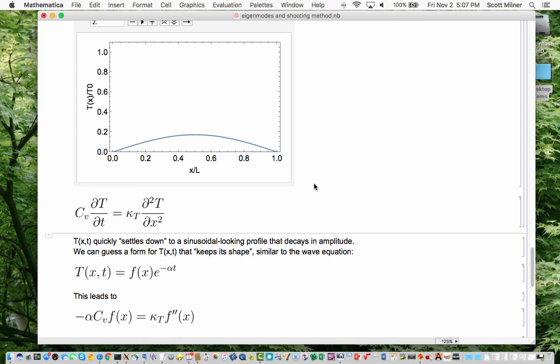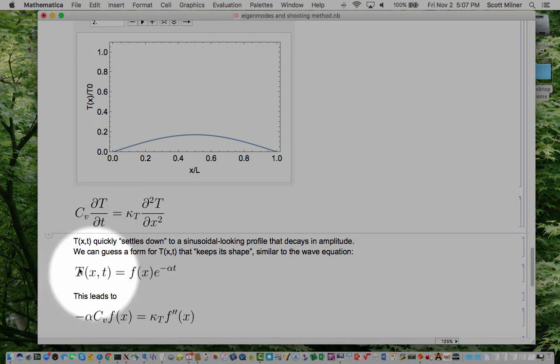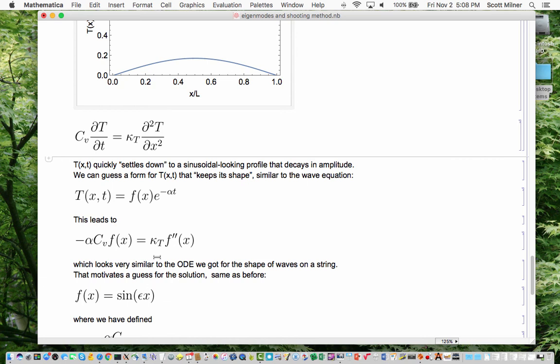So to understand analytically how that comes about we look at the heat transfer equation and make a guess similar to what we did in the case of the wave equation that perhaps the solution can be thought of as a shape that doesn't vary in time except for decaying in amplitude exponentially because that decay there looked maybe like it was exponential. So if you plug this into the heat transfer equation on the left the time derivative hits the e to the minus alpha t and pulls down a factor of alpha but doesn't touch the f and on the right the space derivatives hit the f but they don't touch the decaying amplitude factor. So on both sides you have an e to the minus alpha t which I've cancelled out here and on the left you have a minus alpha from that time derivative times the f and on the right the f gets two space derivatives taken of it so you get a form like that which is very similar to what we got when we analyzed the wave equation for shape of waves on a string.